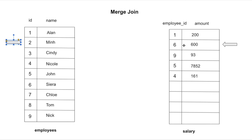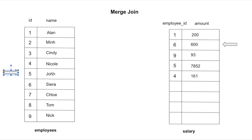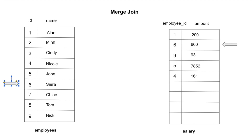It compares the second row of the employees table with the second row of the salary table — not a match, and two is less than six, so it moves the pointer down. The third row of employees compared to the second row of salary is not a match; three is smaller than six. Moving down to four — not a match, four is less than six. Moving further, it finds a match where the id and employee id are equal, so it returns that employees row along with the second salary row. It then moves the second pointer to the next row in the salary table.